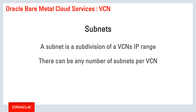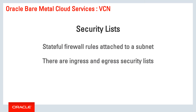Virtual cloud networks have subnets. A subnet is a division of a virtual cloud network's IP range, and there can be any number of subnets per virtual cloud network. Security lists are stateful firewall rules attached to a subnet.